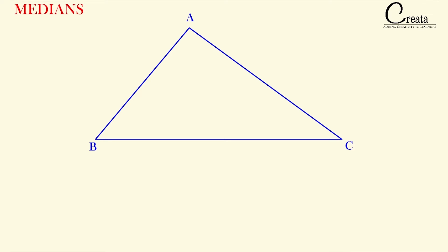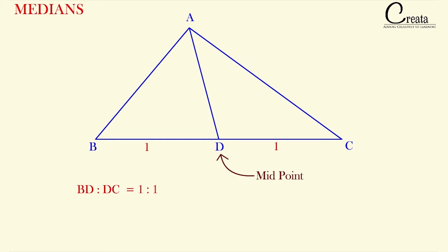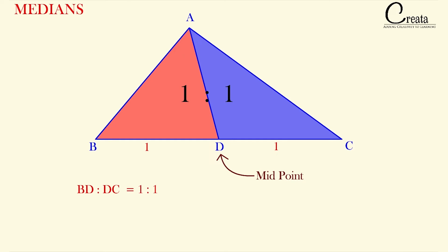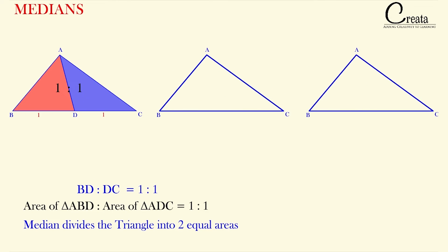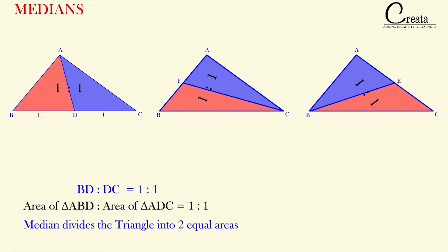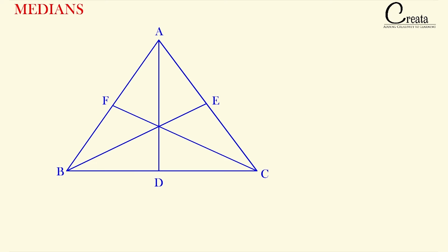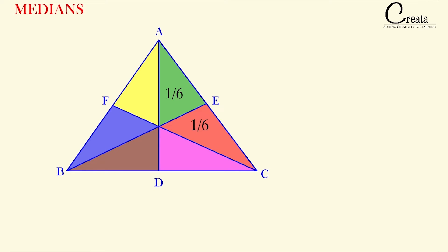If we apply this concept to the medians: medians join the vertex with the midpoint of the opposite side, so the median divides the opposite side in the ratio 1:1. Therefore, the ratio of the areas of both triangles formed will be 1:1 — in other words, the median divides the area of the triangle into two equal parts. Similarly, all three medians divide the area into two equal parts each. If you observe, the three medians together divide the area of the triangle into six equal parts, each being 1/6 of the area of the complete triangle ABC.